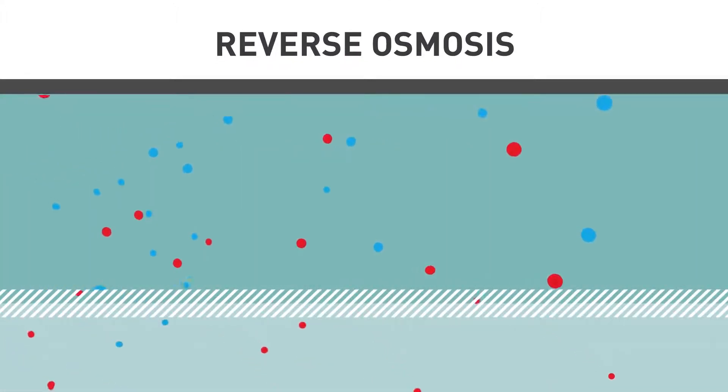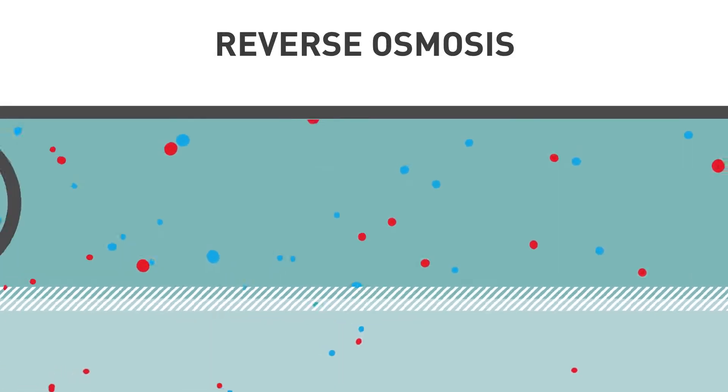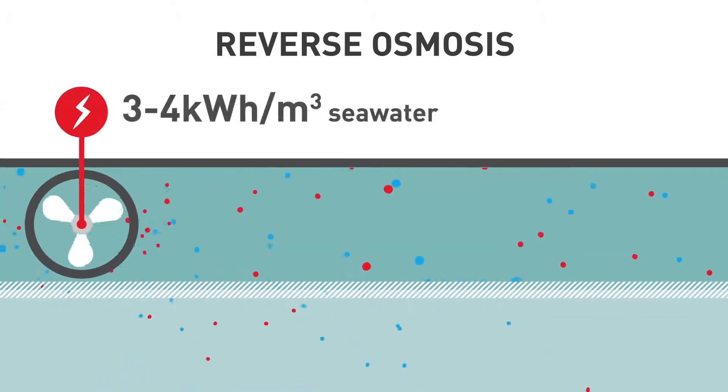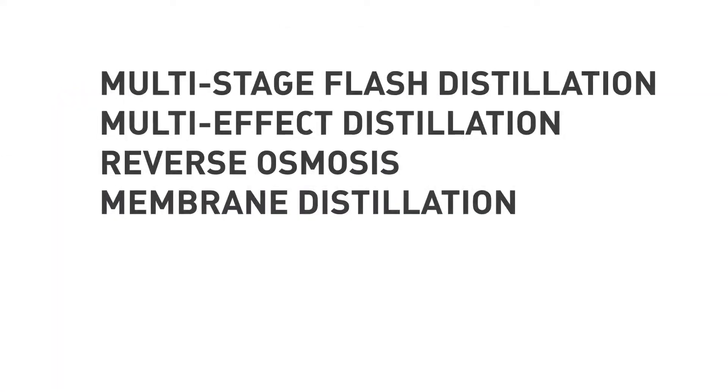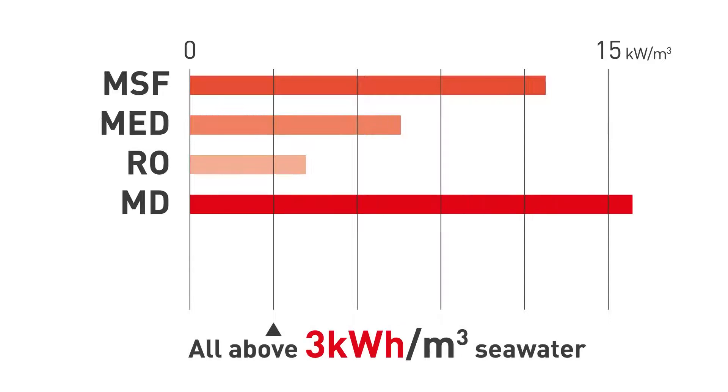Of these technologies, reverse osmosis or RO is a widely accepted system of producing fresh water that is safe for drinking. However, RO uses high pressure that requires a lot of energy. In fact, other desalination technologies require even more energy for the process.